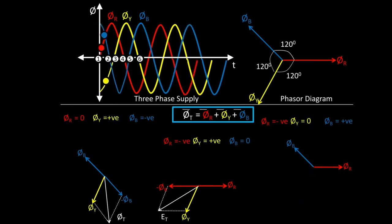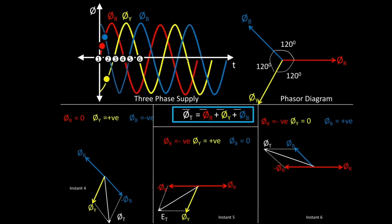Drawing the original phasors, since φY is 0 we remove it. φR is negative, so we extend it in the opposite direction to get −φR. Then we draw the parallelogram between φB and −φR, and then we have the resultant flux φT. So we got the resultant flux phasor φT for instants 4, 5, and 6.